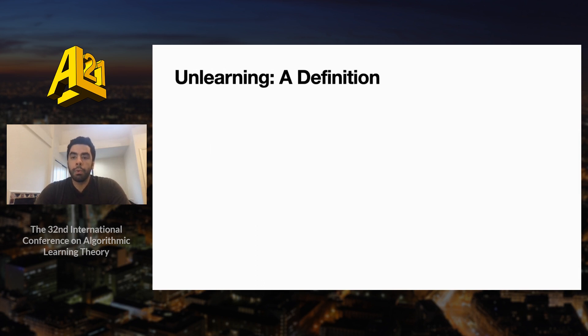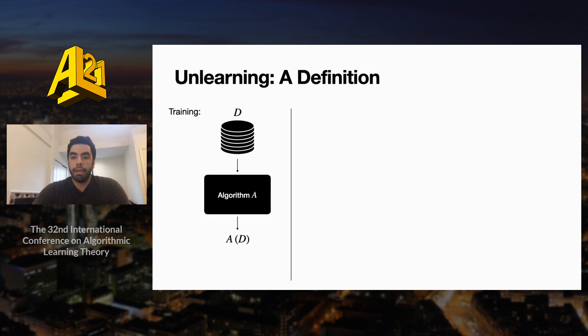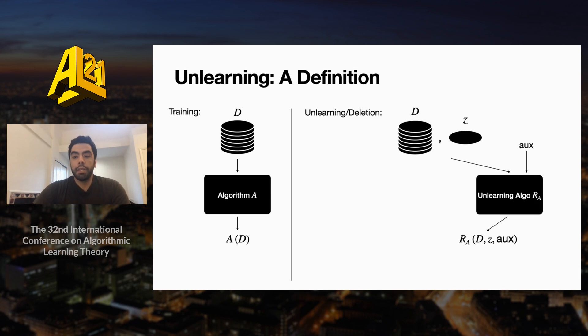So now let's formalize a definition for a deletion algorithm. At training time, we have some data set D and a training algorithm A, which gives us the output model A of D. Now imagine at deletion time, we want to delete some data point z. Let's denote the deletion algorithm by R_A that takes as input the original data set D and the point z, which is going to be deleted, and any other auxiliary input that might facilitate the deletion procedure.